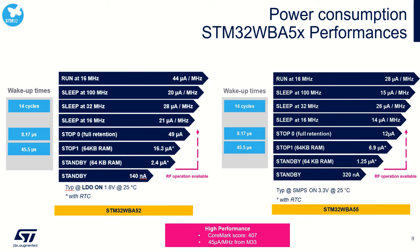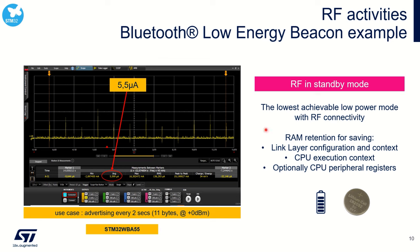Considering this standby current in a real application use case such as a beacon — a device advertising every 2 seconds with 11 bytes at 0 dBm — between those 2-second periods the device enters standby at 1.25 µA. In this use case, total consumption is just 5.5 µA, enabling a beacon application to run for years on a coin cell battery. The standby current during RF operation is key, and you can design peripheral applications running on a coin cell for years.